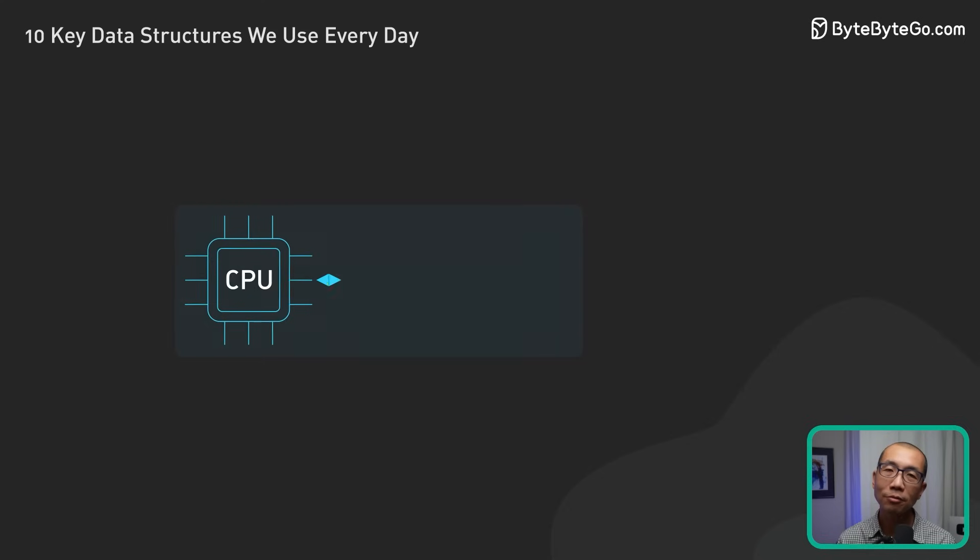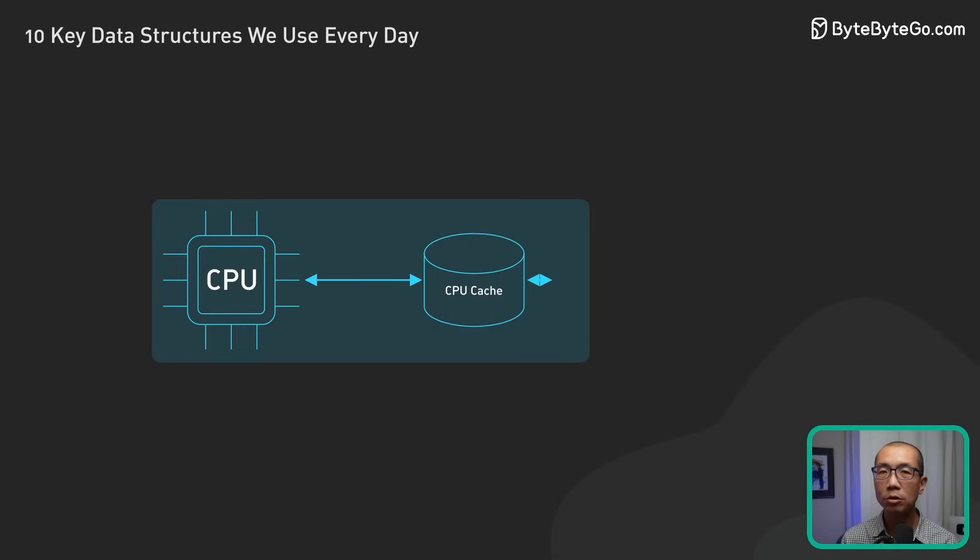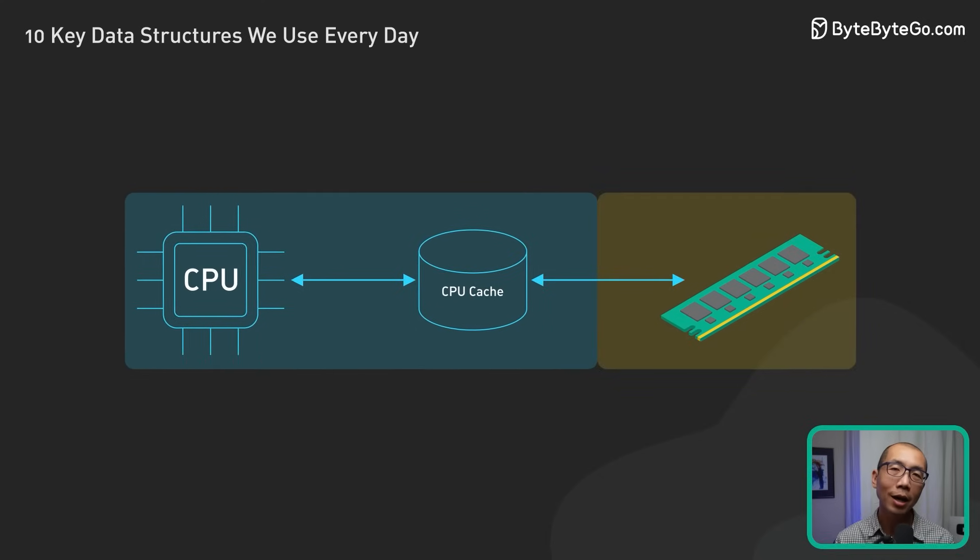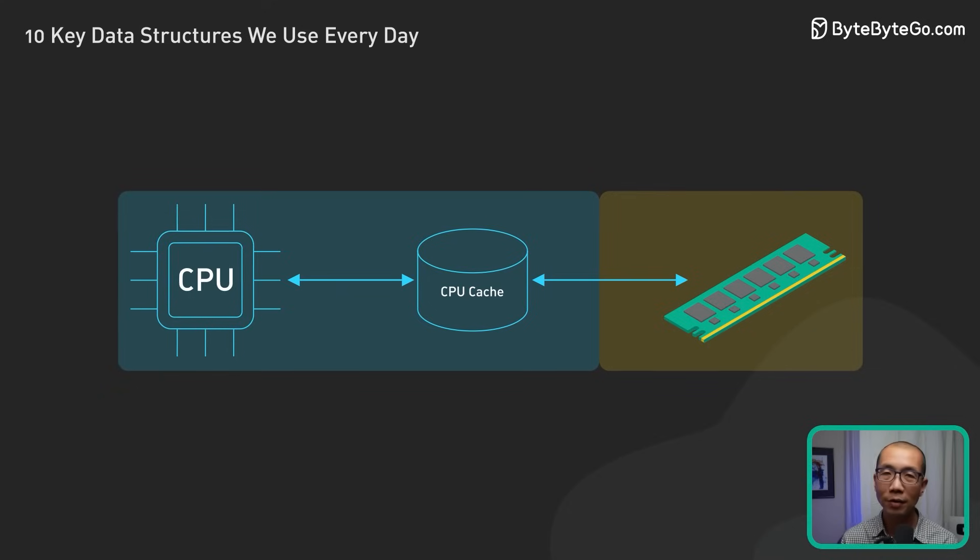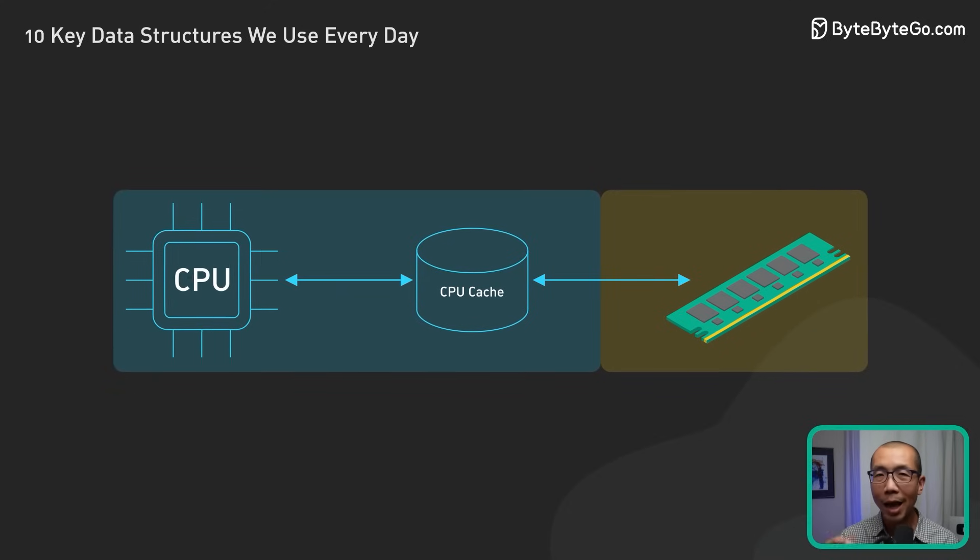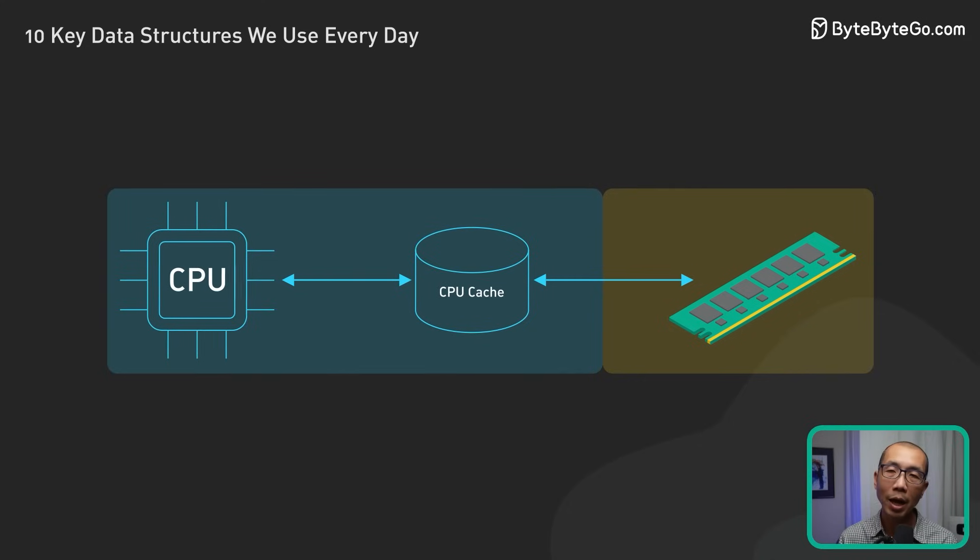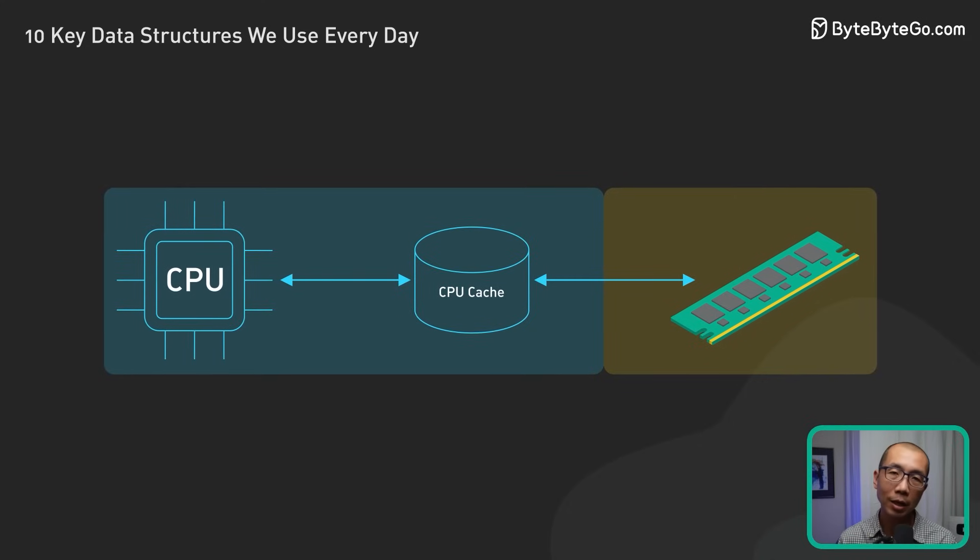Now let's discuss cache-friendly lists and how it relates to various data structures, including lists, arrays, and others mentioned earlier in the video. CPU cache is a small, fast memory between the main memory and the CPU. It stores recently accessed data and instructions, so the CPU can access them quickly without fetching them from the slower main memory.